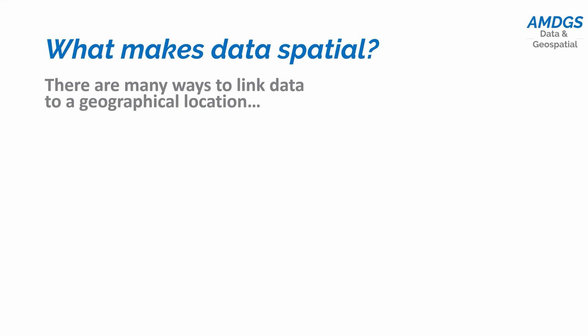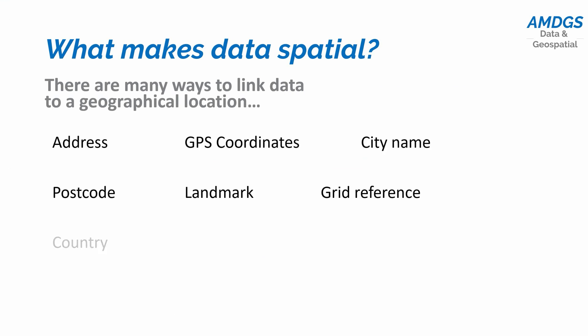There are many ways we can add or already have a spatial component to our data. In GIS, ultimately what we want are GPS coordinates or map coordinates — numeric values that will allow us to calculate a position for our data. Some data sets might have that already if we've been out in the field with a handheld GPS or a phone app. But many other data sets might have addresses, city names, postcodes, landmarks, map grid references, or even just a country name. On a global scale, just knowing the country that data is connected to can be enough to map it and look at global patterns.